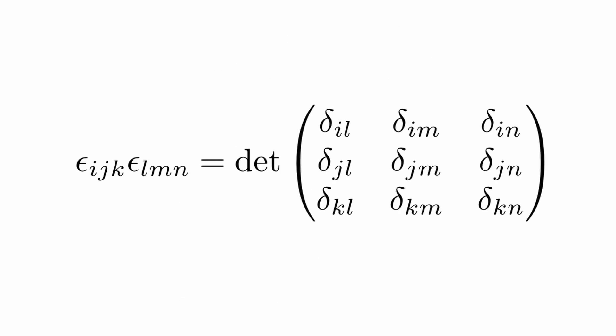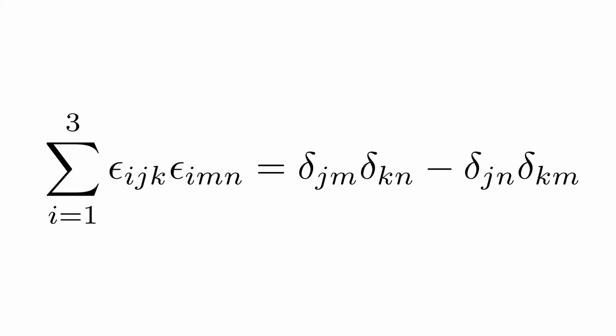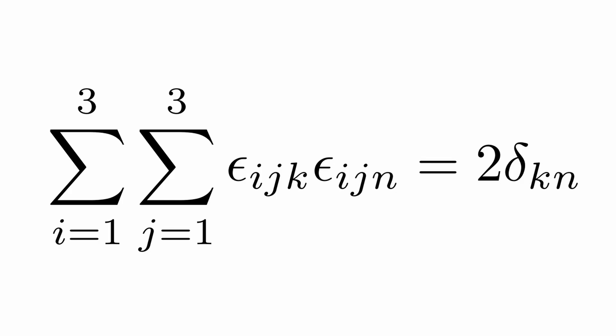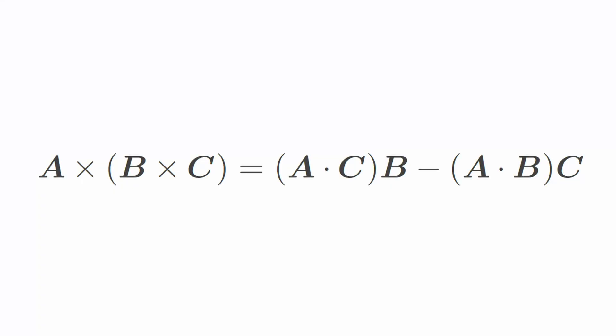So that's the proof of this remarkable relationship. Some useful formulas can be derived by summing over indices. For example, the sum over i of epsilon ijk times epsilon imn equals delta jm times delta kn minus delta jn times delta km. The sum over i and j of epsilon ijk times epsilon ijn equals 2 times delta kn. And the sum over i, j, k of epsilon ijk squared equals 6. These relationships are useful to prove vector identities such as the vector triple product: A cross (B cross C) equals (A dot C) times B minus (A dot B) times C. I'm Jeff Chasnoff, and as always, thanks for watching.